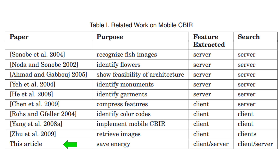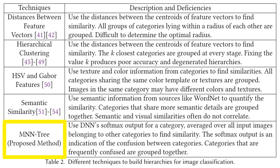In this example, the authors use three columns to classify the methods, the different purposes, and using clients or servers. The proposed method is shown in the last row. In this example, the authors use a few sentences to describe several types of methods, and the proposed method is also in the bottom row.